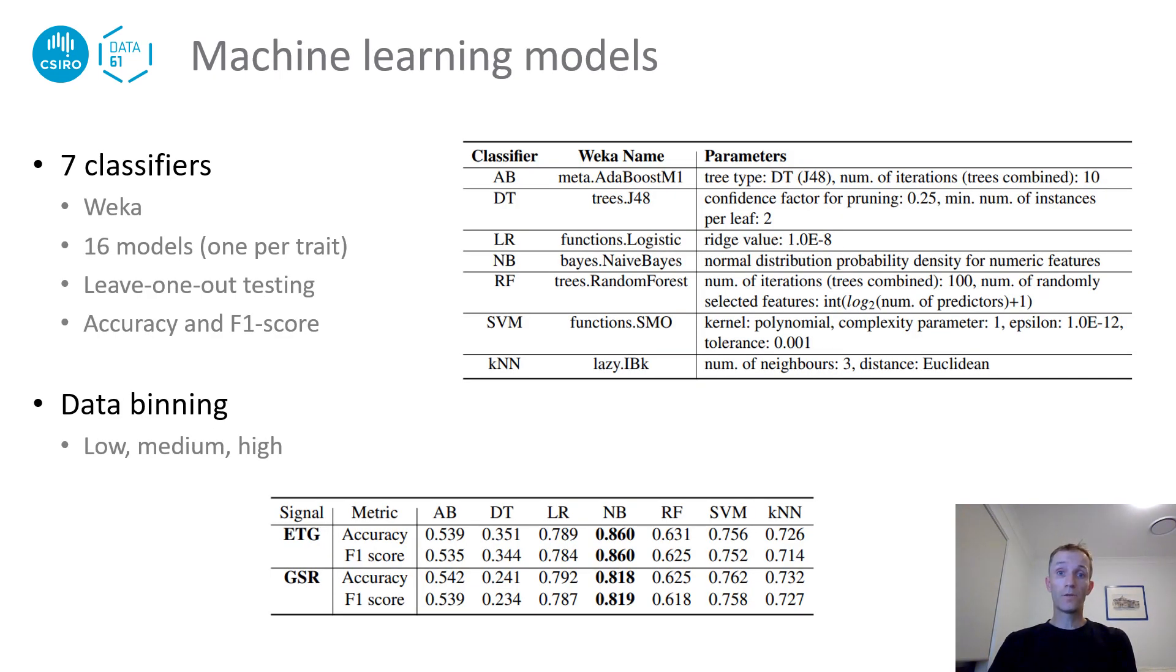We compared seven classifiers using the WEKA open-source toolbox. Since our sample population was small and not exhibiting any specific pathology, we binned the survey data into low, medium, and high, using equal frequency bins for each trait to ensure uniform distributions of subjects across the classes. We applied the leave-one-out testing, whereby the model is trained using all but one participant and testing on the remaining one. This process is then repeated for each participant, and the accuracy and F1 scores averaged over all the repeats.